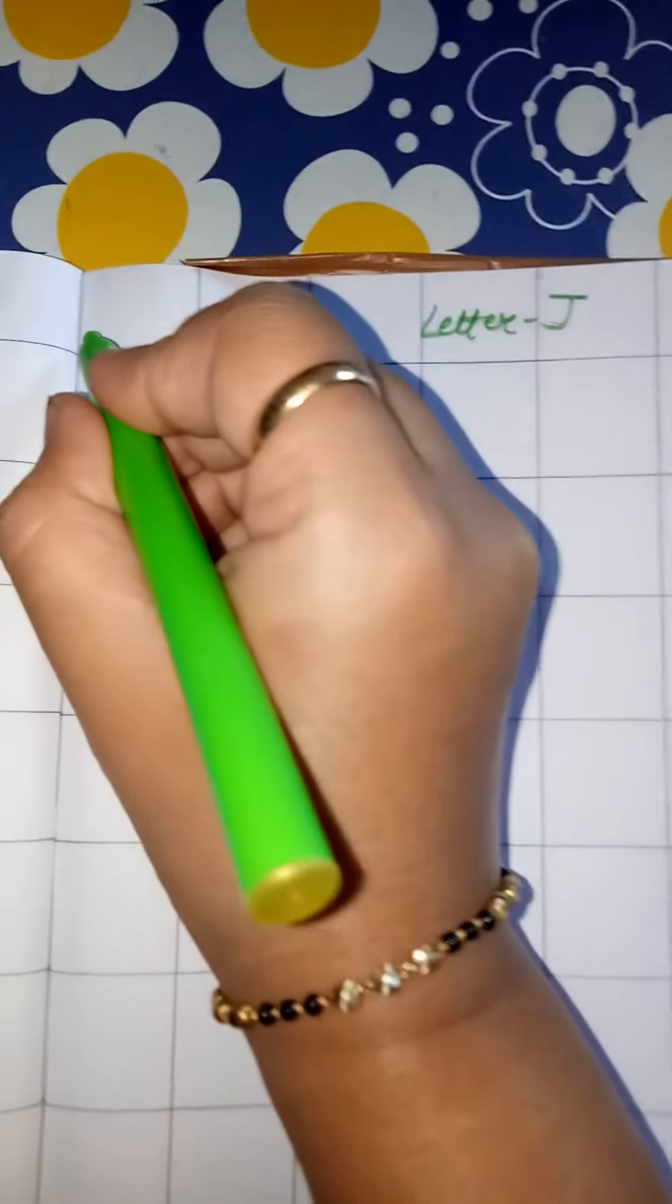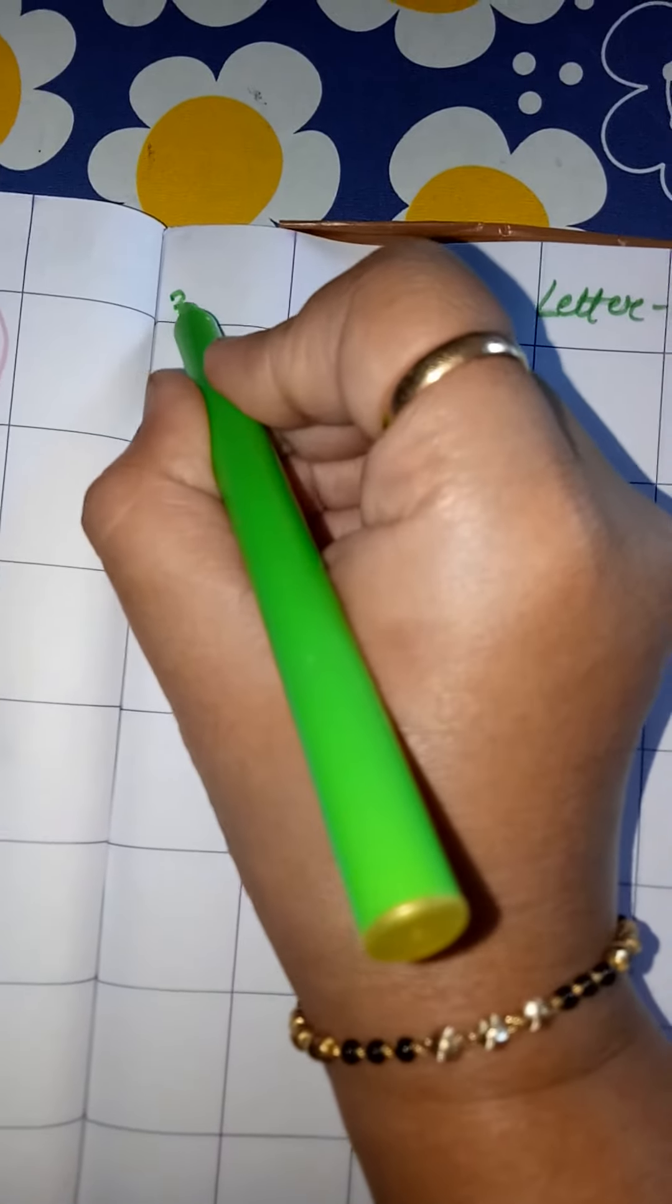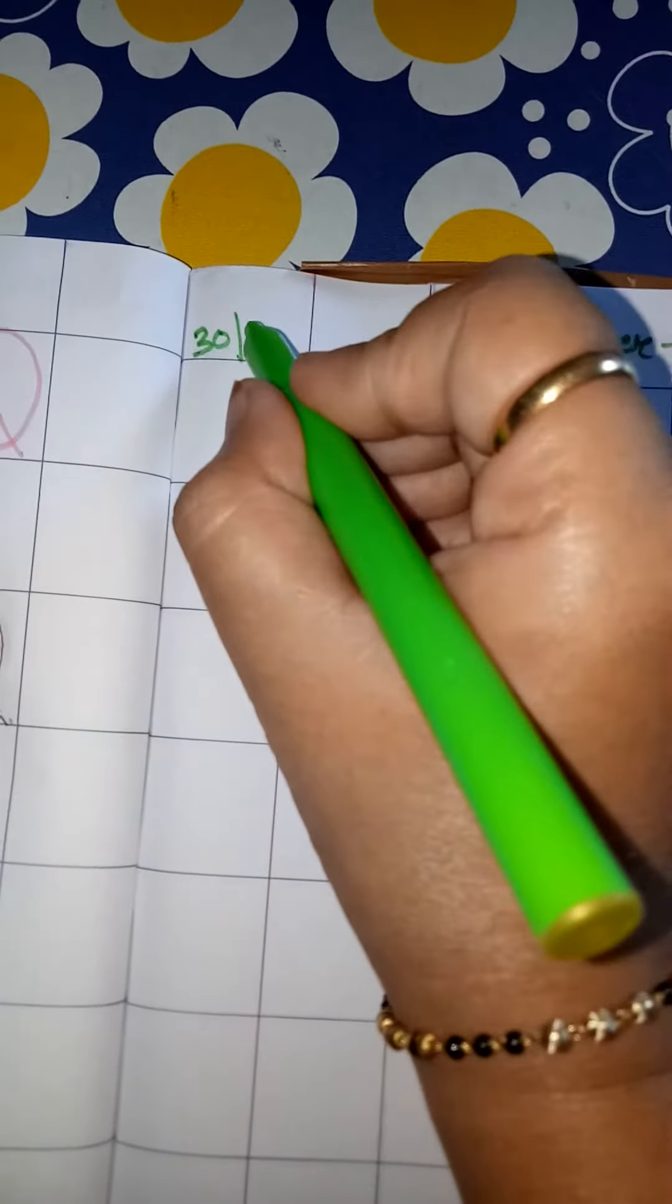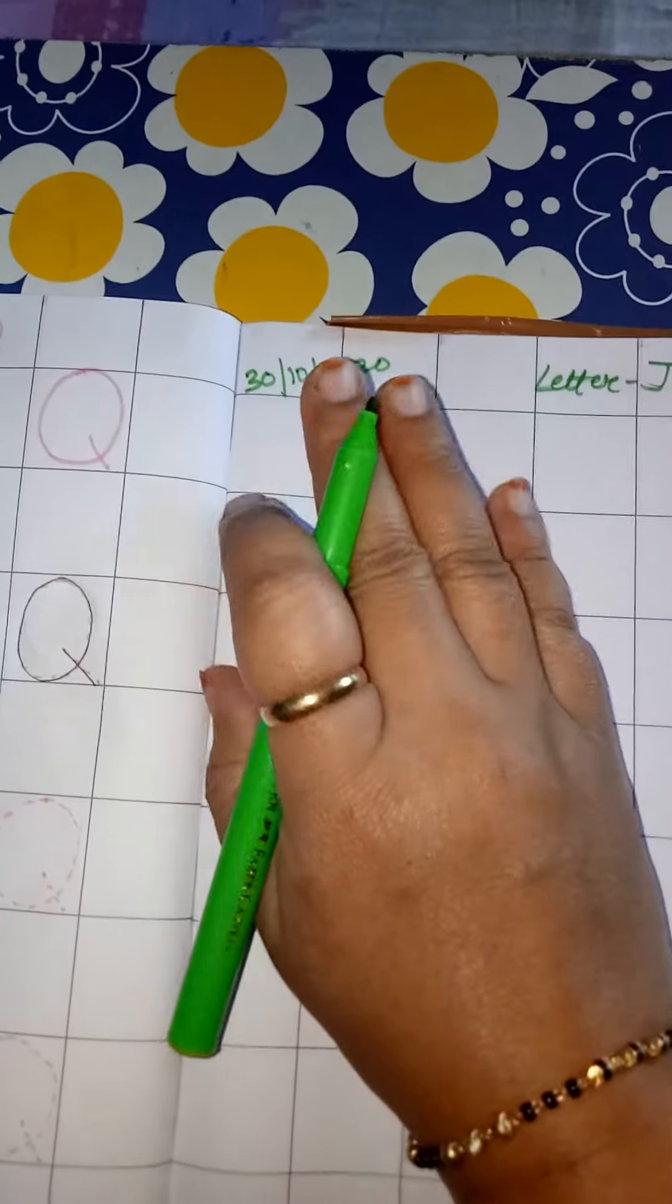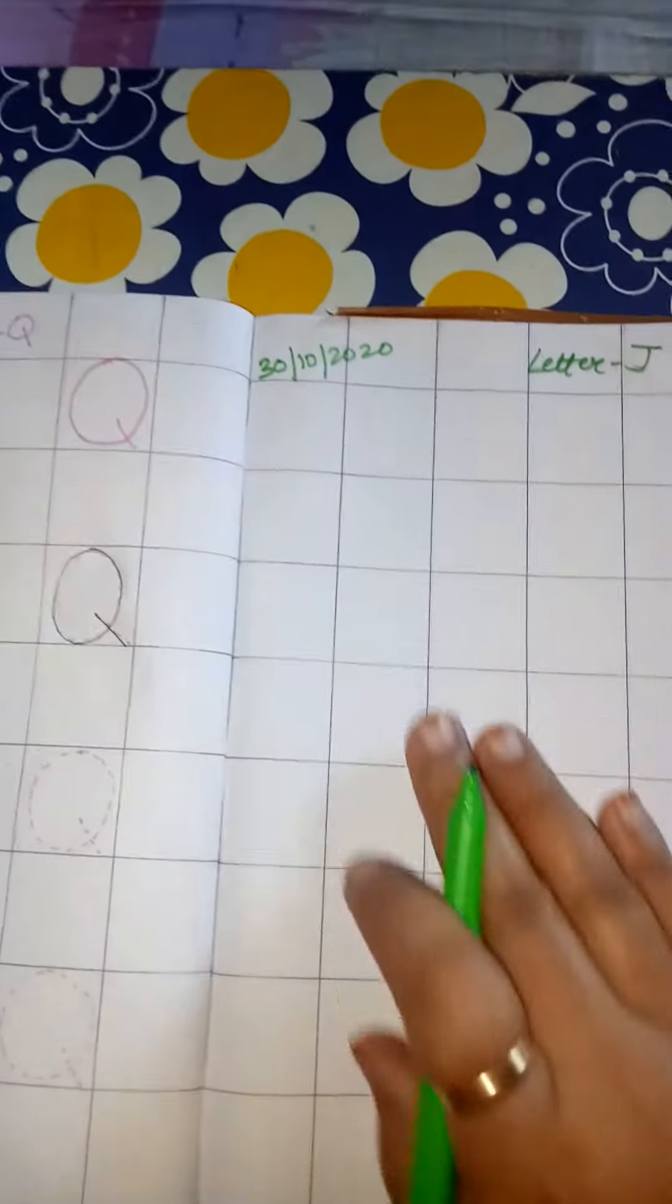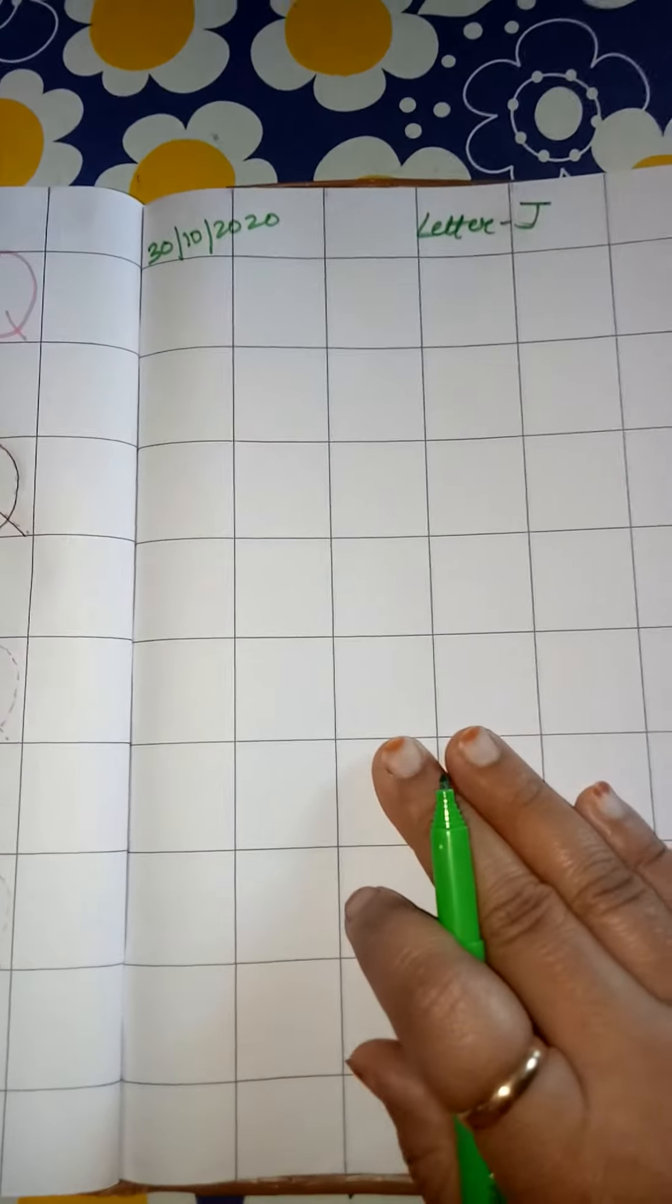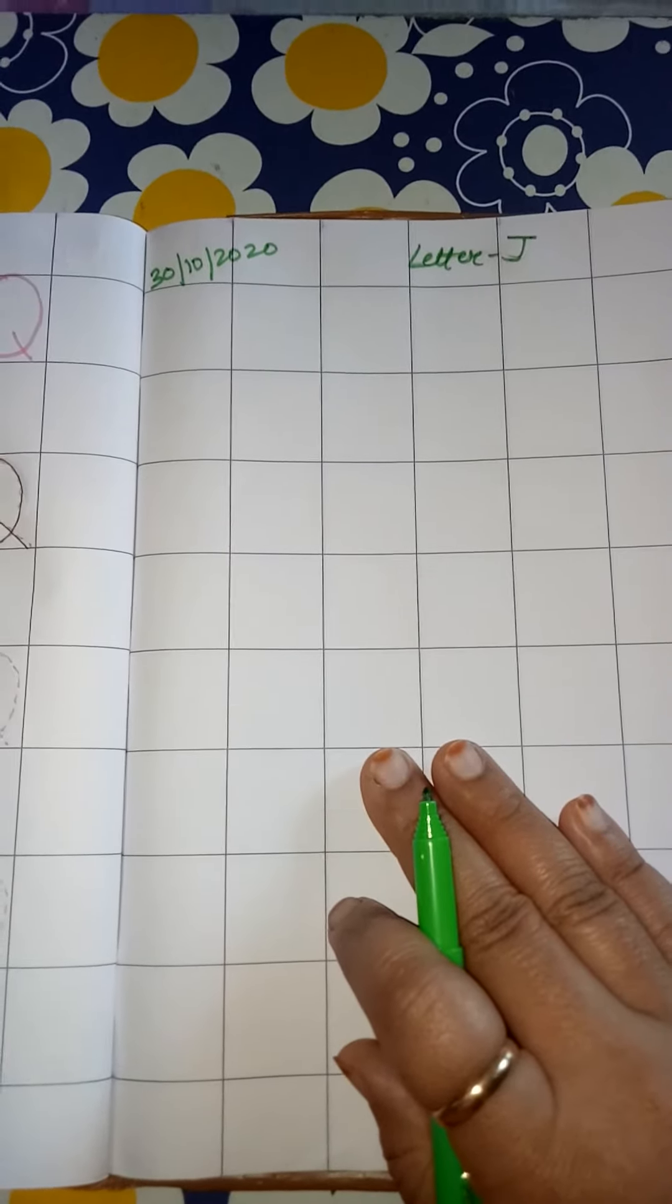Hello and good morning children. Today we will write letter J in your pattern copy. First of all, we will write the date on which we are going to do this work. Suppose you are doing it on 30th October, then you will write 30 October 2020, or whichever date you are going to do this work.